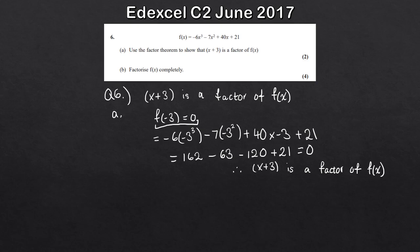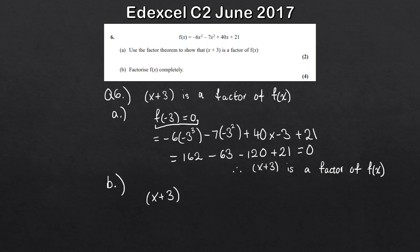So that's part A done. Part B is essentially just a follow-up from part A. So even if you can't do part A, you can still have a go at part B. To factorise f of x - this is a cubic polynomial, so what we should expect is a product of three factors. We know one of the factors is x plus 3. Now, if I multiply x plus 3 by something I should get f of x, so what I need to do is find the quadratic that, when multiplied together with x plus 3, gives me f of x.